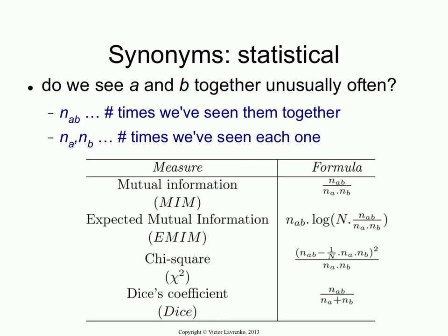There are a number of other metrics. We talked about the Dice coefficient — I think this is actually missing a term. And the EMIM is quite similar to mutual information: you take the mutual information, multiply it by N, where N is the number of windows or documents. Then take the log of the entire thing and multiply it by N of AB.